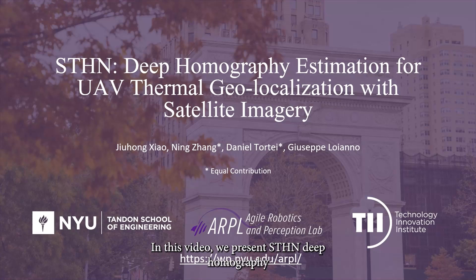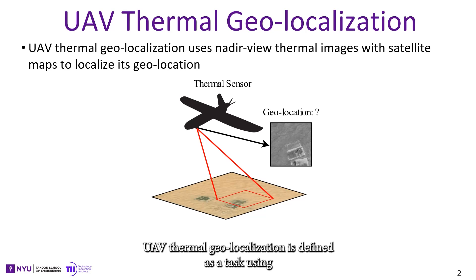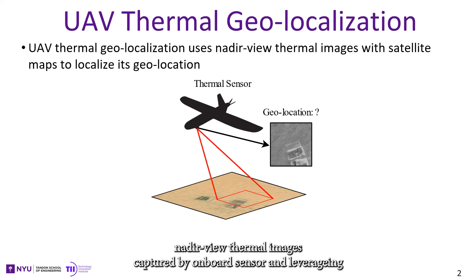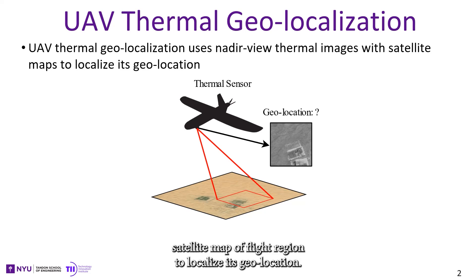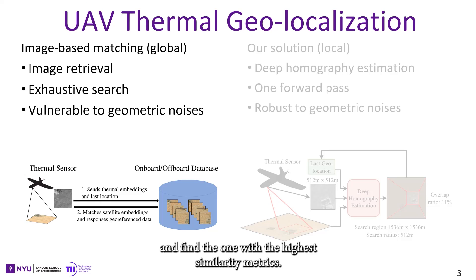In this video, we present SDH and deep homography estimation for UAV thermal geolocalization with satellite imagery. UAV thermal geolocalization is defined as a task using nadir-view thermal images captured by an on-board sensor and leveraging a satellite map of the flight region to localize its geolocation. Existing image-based matching methods follow an image retrieval framework — that is, compare the thermal image with a satellite image database and find the one with the highest similarity.